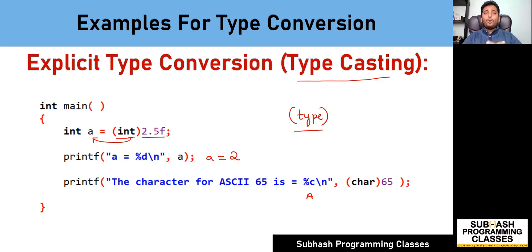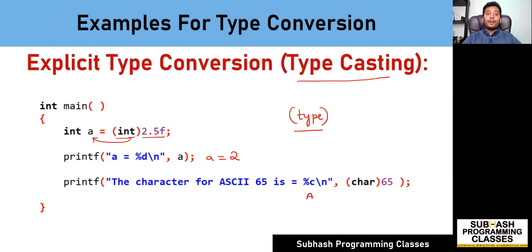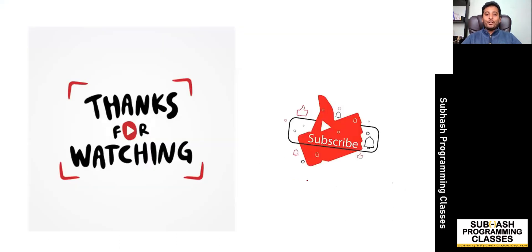So this is all about this lesson. Hope you understood how type conversion works — both implicit and explicit type conversion. I especially want you to keep the generic rule in mind; read it two to three times so that you understand type conversions better. You can consider this as a core formula for understanding type conversions in C language. In the upcoming lessons, I'm going to give you some standard practices that you need to follow while writing C programs. Hope you enjoyed this lesson. If you learned something new, don't forget to like this video, subscribe to my channel, and click on the bell icon so that you don't miss out on any upcoming updates in this programming series. Meet you in the next lesson. Until then, take care. Bye bye.